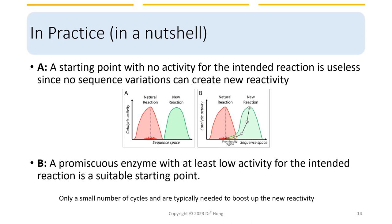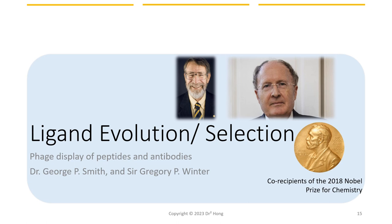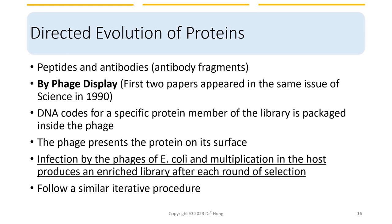The 2018 Nobel Prize for Chemistry is shared with two other scientists who were credited for their involvement in phage display of peptides and antibodies. Phage display is a technique that is often used to carry out directed evolution for peptides and antibodies. In phage display, a library of proteins, typically peptides or antibody fragments, is genetically encoded into the genome of a bacterial phage, and the library is then expressed on the surface of the phage particles, allowing for the selection of specific peptides or antibodies from the library.